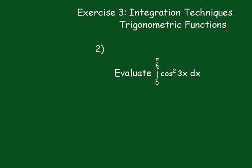Alright, number 2. Evaluate the integral between pi upon 6 and 0 of cos squared 3x dx. I'm going to pause the video.